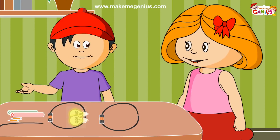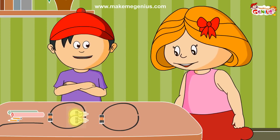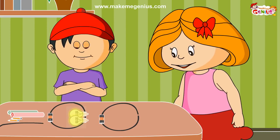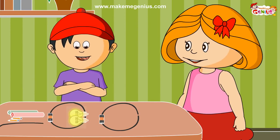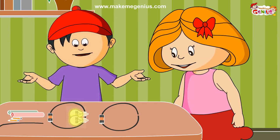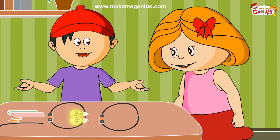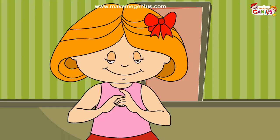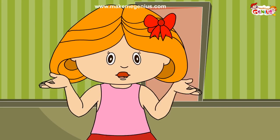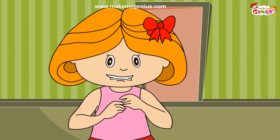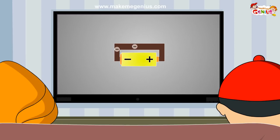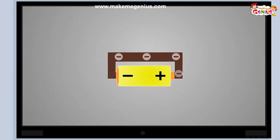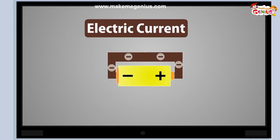You are right. To do something useful with electric current, we need to put an electrical component into the circuit, such as a bulb, that can use the current to make something happen. You already know quite a lot. Now let's learn some more. When electric charges move in a wire, we say that an electric current flows in the wire.